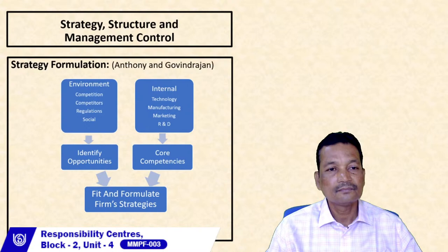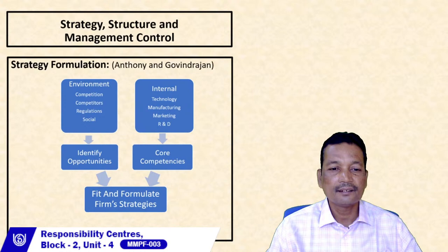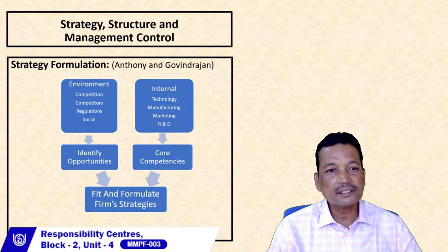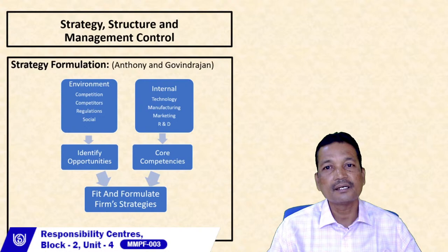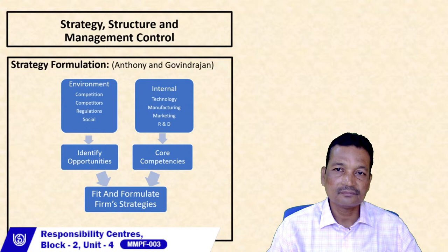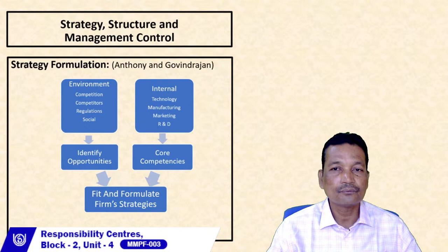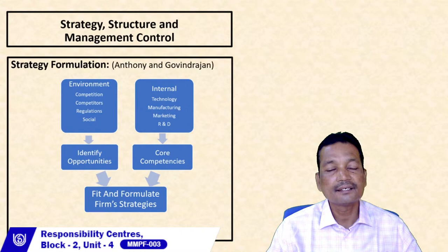What are the various strategy, structure, and management control considerations? Let us look at strategy formulation first. When we talk of strategy, we talk of the way the organization is adapting or moving forward to achieve its long-term goals — that means the direction in which the organization is moving. To find that direction, we look at achieving objectives in the long run. This is the general idea as proposed by Anthony and Govindra.